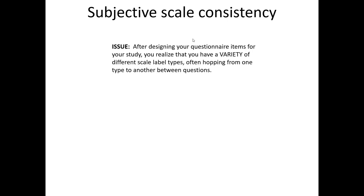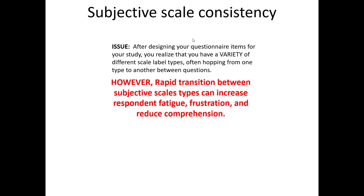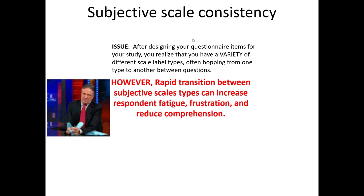Let's consider the issue of managing subjective scale consistency within our survey. Here's a common issue that happens after we design all the questionnaire items. Once they're all finished, we realize that we have selected a variety of different scale label types, which means the participant would be hopping from one type to another between questions. Rapidly transitioning between different subjective scale types can increase respondent fatigue, frustration, and comprehension problems. We do not want this to happen during our survey.